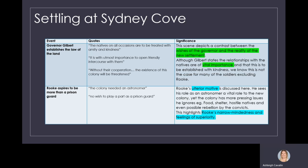Settling at Sydney Cove. Governor Gilbert establishes the law of the land. This scene depicts a contrast between the wishes of the governor and the reality of the new settlement. Although Governor Gilbert states that relationships with the natives are of vital importance and that they are to be established with kindness, we know that this is not the case for many of the soldiers, and Rook is probably the only one that's excluded from this.